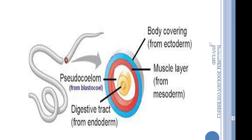If we cut Ascaris, we can confirm that it is pseudocelomate because it contains a covering layer which is the ectoderm, the digestive tract surrounded by the endoderm, and between the two layers a mesoderm that covers only the outside of the cavity. That's why this cavity is a pseudocelom and not a true celom.